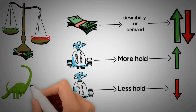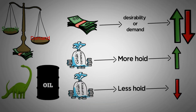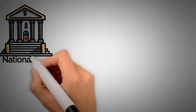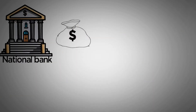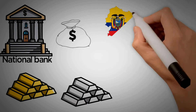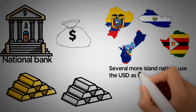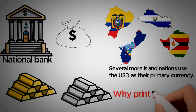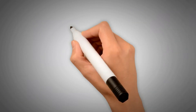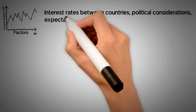For example, the US dollar is often touted as the international business currency, especially for fossil fuel transactions. Most countries' national banks also use the US dollar as their reserve currency — they stockpile massive reserves of that currency for emergencies. This is similar to what most of the world used to do with precious metals like gold and silver. Additionally, as of this writing, Ecuador, El Salvador, Zimbabwe, Guam, and several more island nations use the US dollar as their primary currency. Why bother to print your own? There are many factors that affect demand for a currency, such as interest rates between countries, political considerations, expectations, and trade balance.